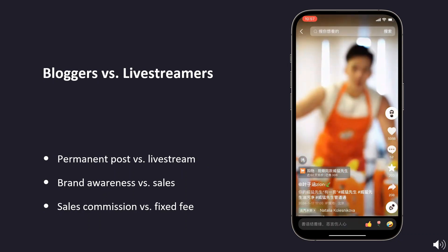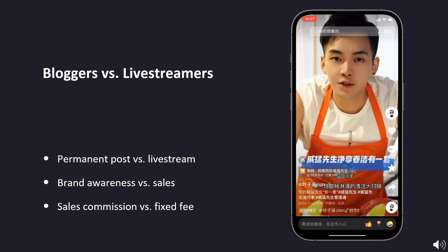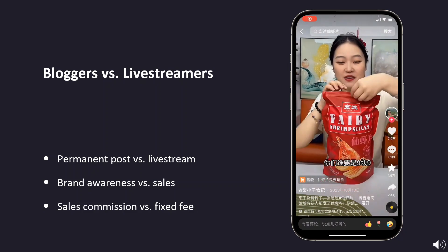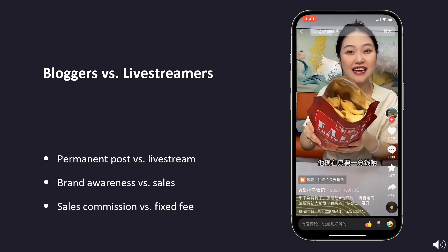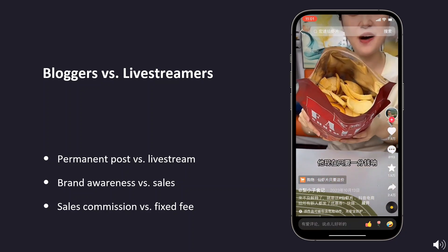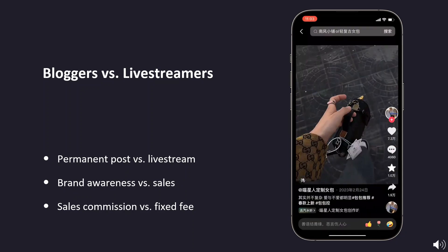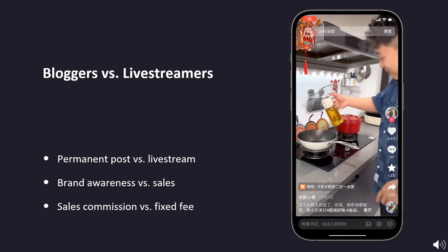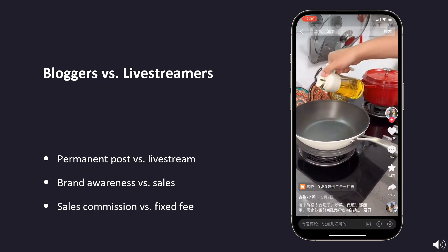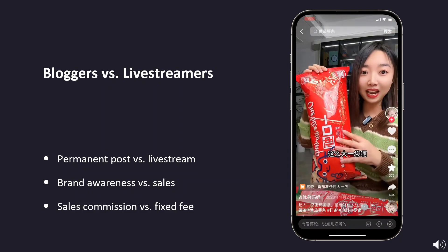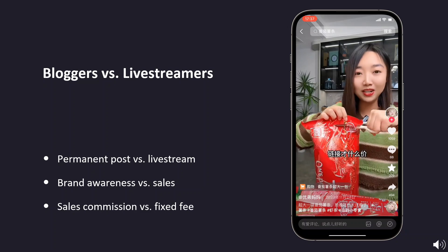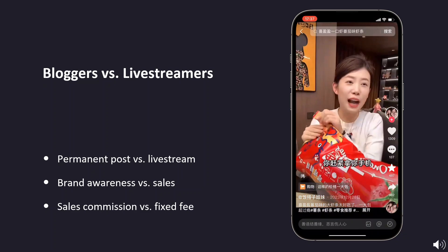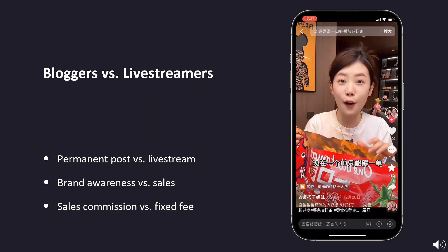Let's examine the differences between influencers who post content on your channel and live streamers. The first difference is clear: live streams disappear after the event. This means that when people search for your name on the platform later, they won't find any evidence of your live stream or any marketing activity. In contrast, videos published by influencers remain on their channel, so whenever people search for your name, they will find these posts. This is beneficial for brand exposure, as you want people to see a lot of your content to create the impression of a well-known brand.